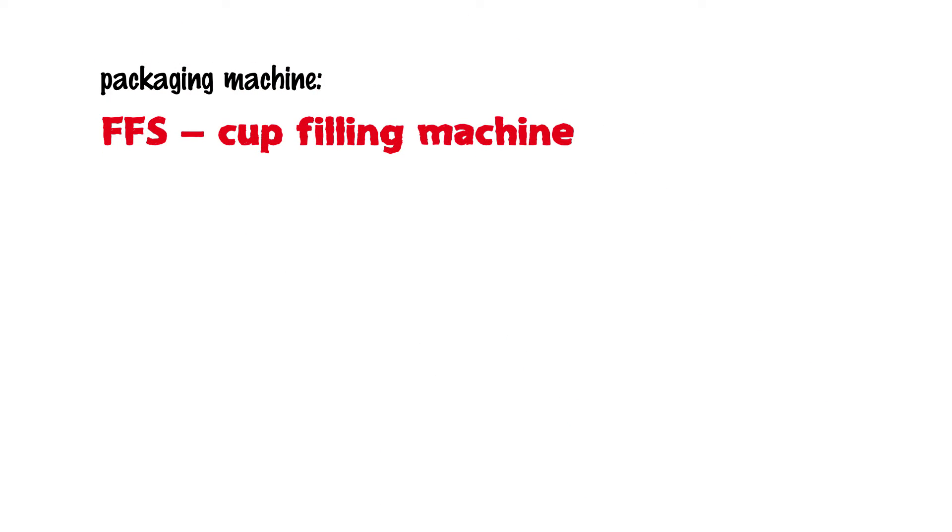When it comes to packaging machines for primary packaging, a distinction is made between two types of machines: form, fill, and seal machines (or FFS), and fill and seal machines (or FS).